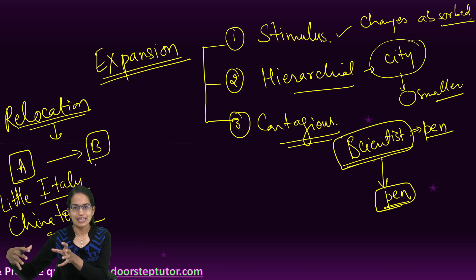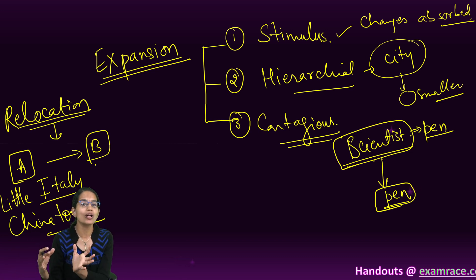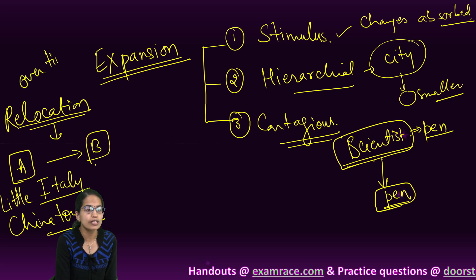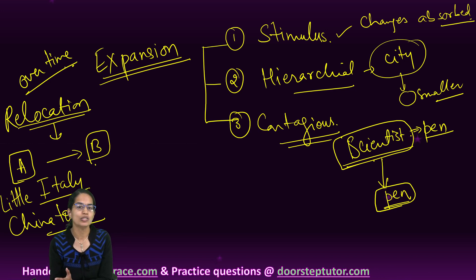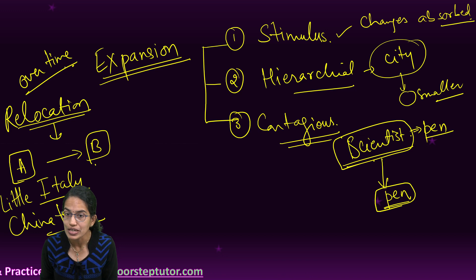We call this as Chinatown because most of the Chinese people would be dwelling there and would have a similar culture which would be seen in the region of Chinatown. We call this relocation and this occurs over time when a person moves from one location to another. This is what is known as relocation diffusion. It's not a part of expansion diffusion.